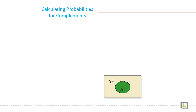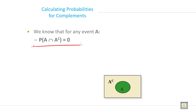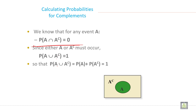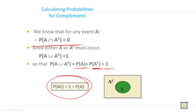Now, calculating probability for complement. We know that for any event A, probability of A intersection A complement is equal to 0. Since either A or A complement must occur, probability of A union A complement is equal to 1. So probability of A plus probability of A complement equals 1, which means probability of A complement is equal to 1 minus probability of A. This is important.